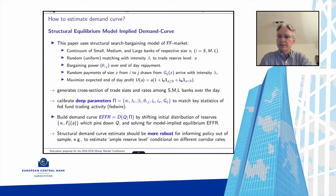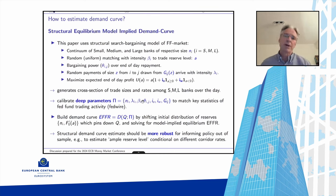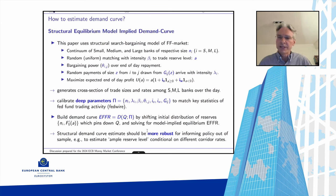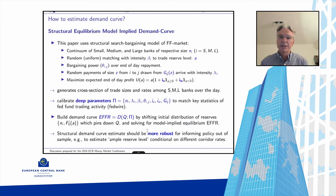Shifting the initial aggregate quantity of reserves, the model delivers an explicit solution for the volume-weighted average rate across all trades — creating the endogenous structural demand curve. The specification is not ad hoc but conditional on the structural model. Deep parameters — probability of meeting a trading partner, bargaining power, frequency of payment shocks, additional discount window cost, liquidity benefit of reserves — are assumed stable across environments, which justifies using the model for out-of-sample predictions about how the interbank market would behave at reserve levels outside recent experience.